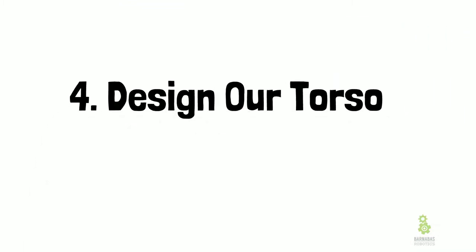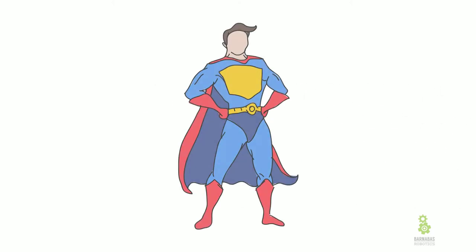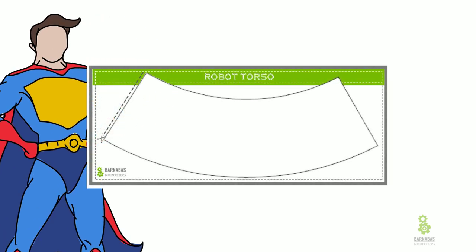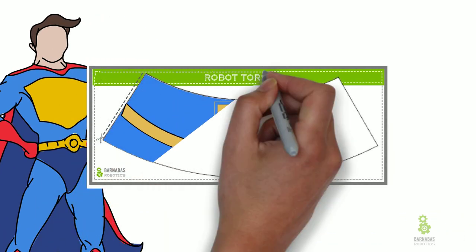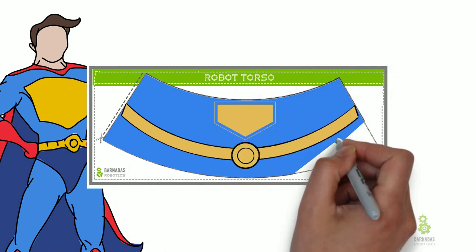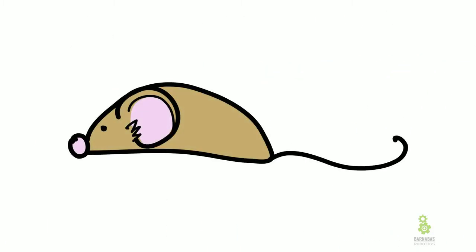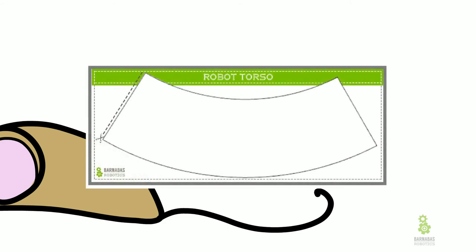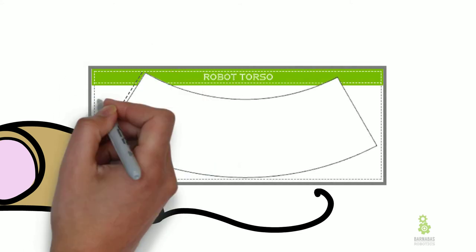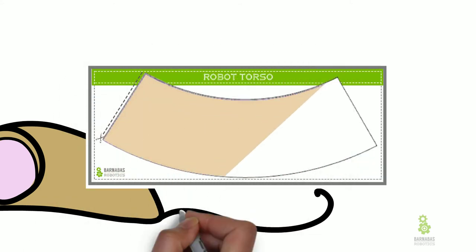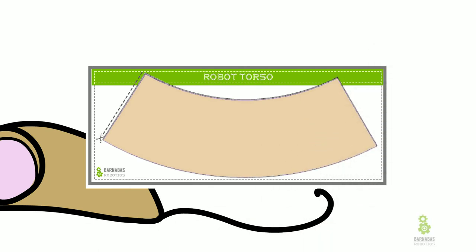Now we've got to design our torso — and torso is another word for chest. So imagine I'm doing the superhero: I take my torso design and I'm going to color what's in my brain to match on the torso. Looks pretty good — a belt, a little triangle thing. Now if I'm doing the mouse, I take my robot torso, and since my mouse in my brain is brown, I'm just going to color it brown. You might do a mouse that's red — that's cool — or pink, that's fine too. But mine's brown.